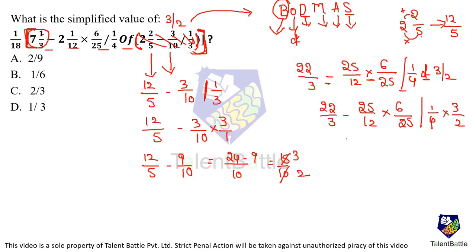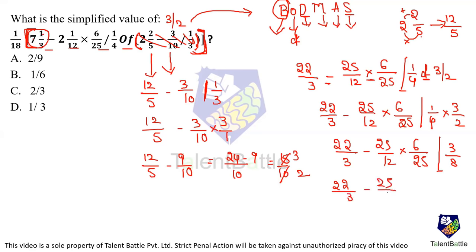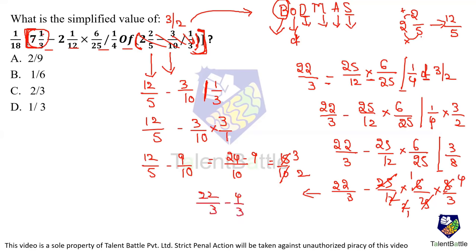Now: 22/3 minus 25/12 × 6/25 ÷ 3/8. Substitute the division — dividing by 3/8 means multiplying by 8/3. Cancel: 25 cancels, 6 gives 2, 12 gives 4, 2 and 4 cancel. Result: 22/3 minus 4/3. Taking LCM = 3: 18/3 = 6. So the entire bracket equals 6. Finally, 1/18 × 6 = 1/3. The answer is 1/3, option D.